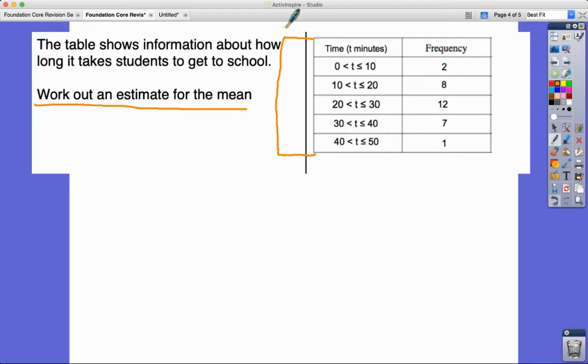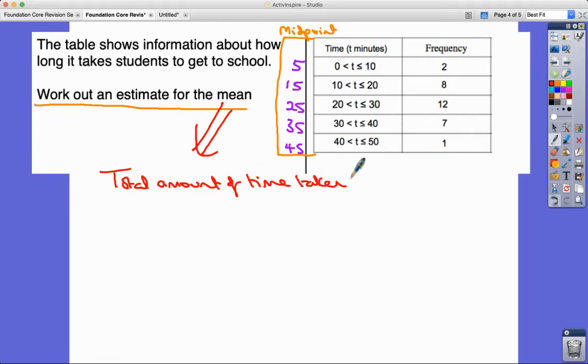What we're going to do is assume that everybody in here took the midpoint amount of time, the middle, the medium amount of time. So we're going to find the midpoint of each group. For this group here, halfway between 0 and 10 is 5, halfway here is 15, halfway here is 25, and then we've got 45. To find an estimate for the mean we're going to have to find the total amount of time taken to get to school and divide it by the number of students.